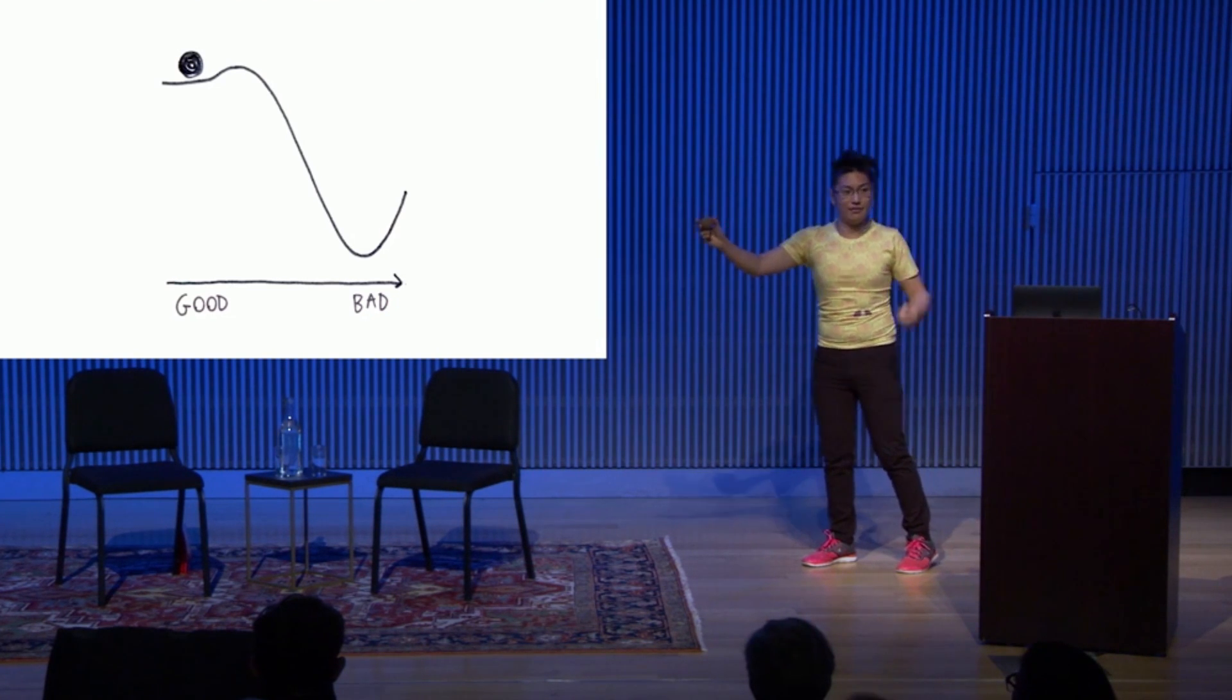So imagine you have a ball on an oddly shaped hill. And let's say that the left-right position represents how good or bad something is. So if the ball's way on the left, okay, that's good. That means none of the power stations have failed and all the banks are still alive.